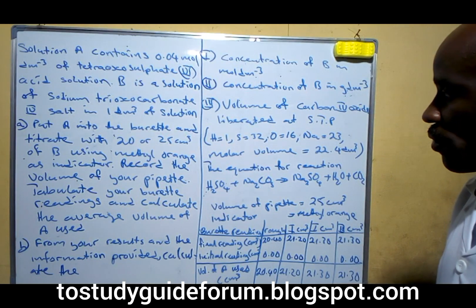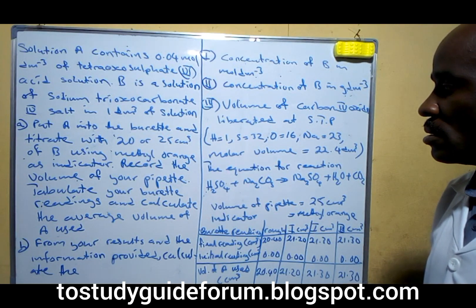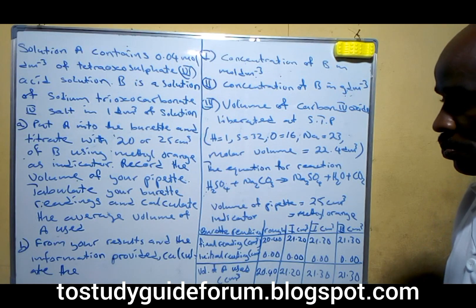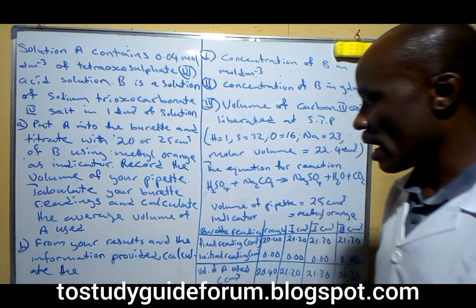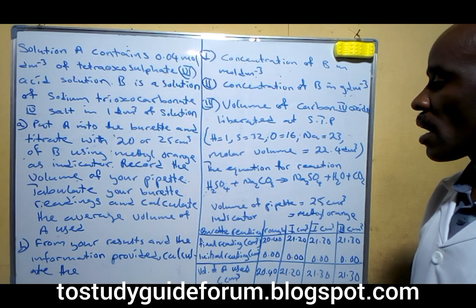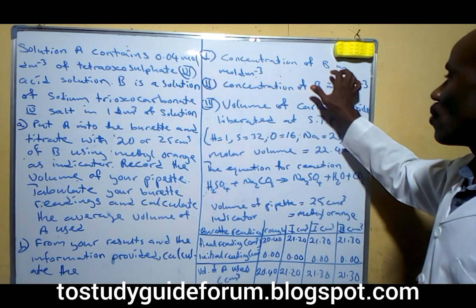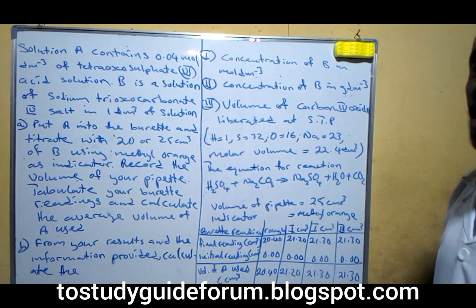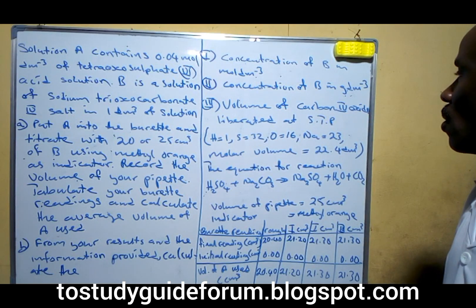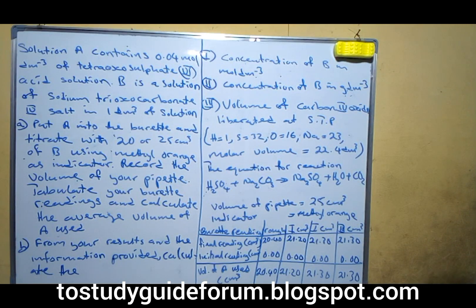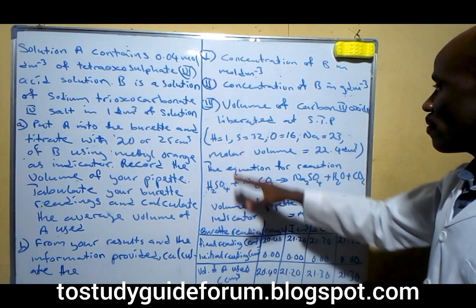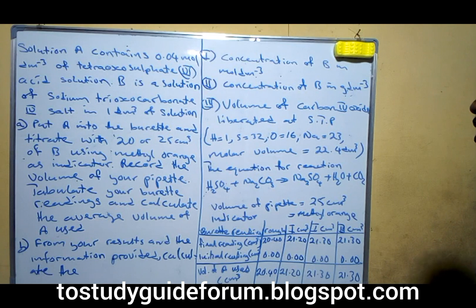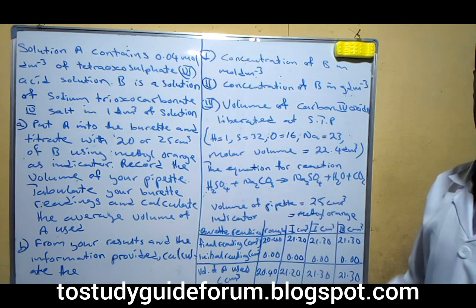Record the volume of your pipette, tabulate your burette readings, and calculate the average volume of A used. From your results and information provided, calculate the concentration of B in moles per dm³, the concentration of B in grams per dm³, and volume of carbon (IV) oxide liberated at STP. The relative atomic masses, molecular masses, and molar volume are given to us.